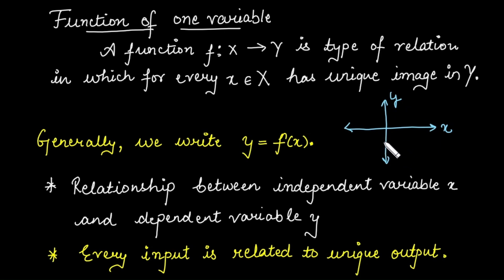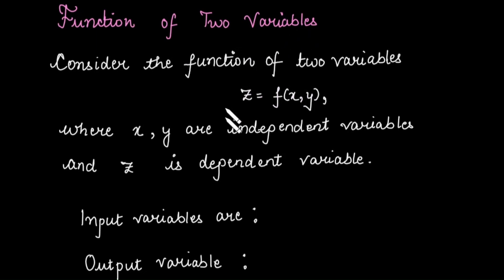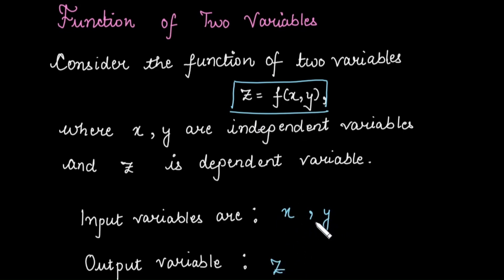Now, we are going to move to the function of two variables. The function of two variables is defined by the form z = f(x, y). We have a function that depends upon two independent variables x and y, and that output is stored in z. The input variables are x and y, and the output variable is z.